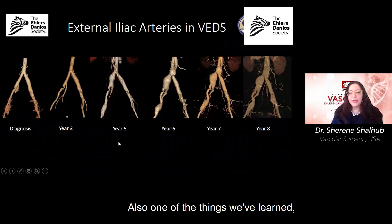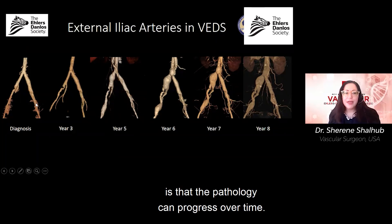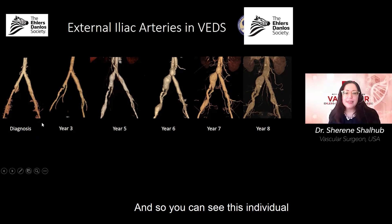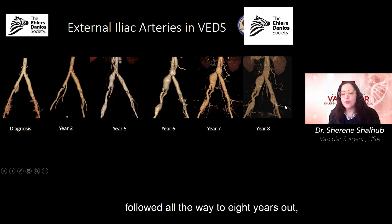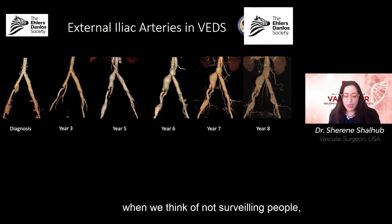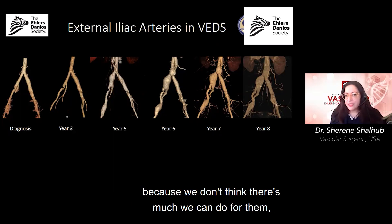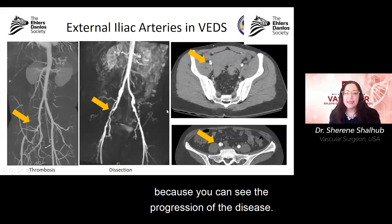One of the things we've also learned is that pathology in the external iliac and common iliac arteries can progress over time. You can see one individual with baseline imaging at diagnosis followed all the way to eight years out, demonstrating clear disease progression. This is very useful, because it shows that surveillance is worthwhile — you can track the progression.